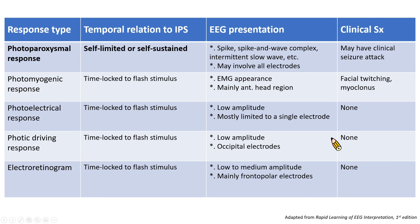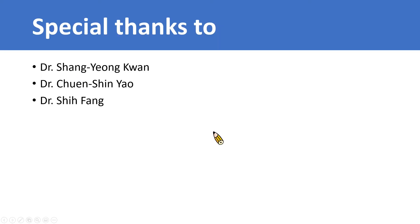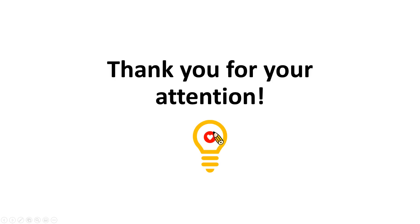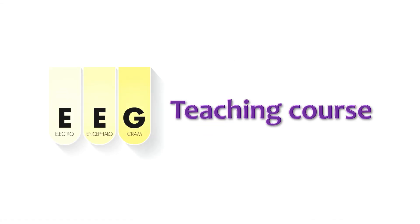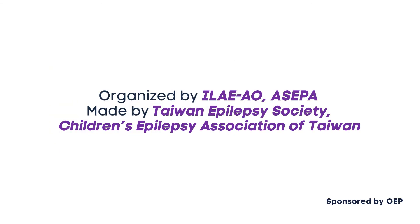This table is adapted from Dr. Guan's book and summarizes the important points for identifying the five types of responses during IPS. I want to thank Dr. Guan and Dr. Yao for inspiring me on EEG learning, Dr. Guan for providing beautiful EEGs and suggestions in this lecture, and Dr. Fan for English editing. Hope you enjoy the lesson and thank you for your attention.